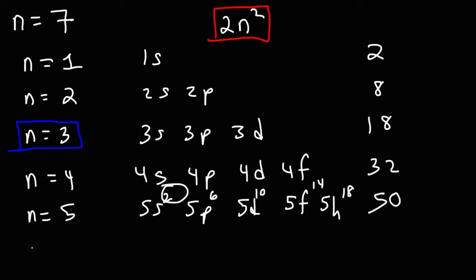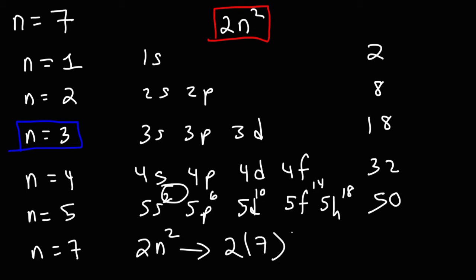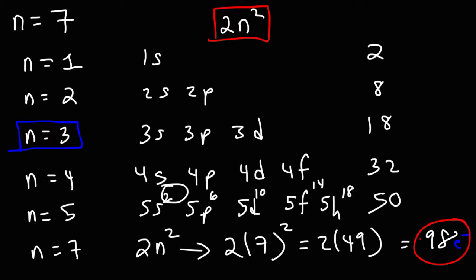So when n is 7, the maximum number of electrons is going to be 2n squared, or 2 times 7 squared. 7 squared is 49, and 49 times 2 is 98. So the maximum number of electrons in the 7th energy level is 98 electrons.